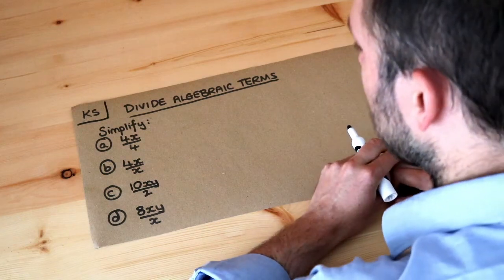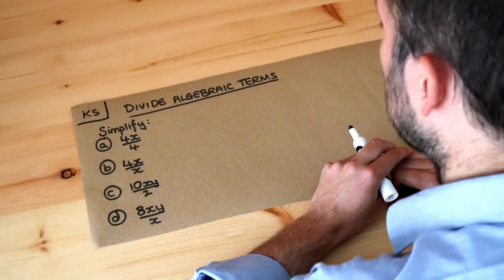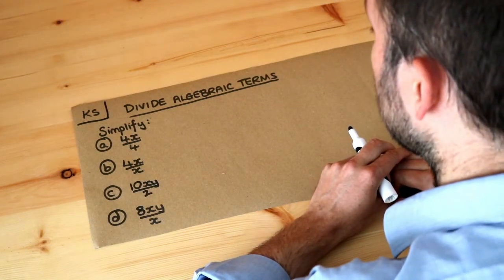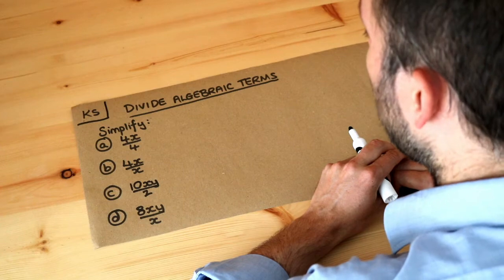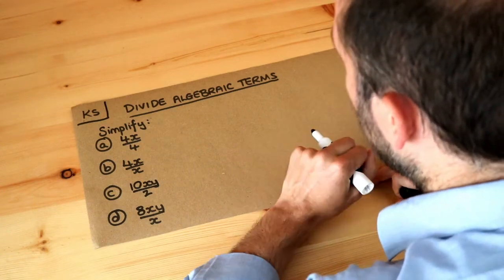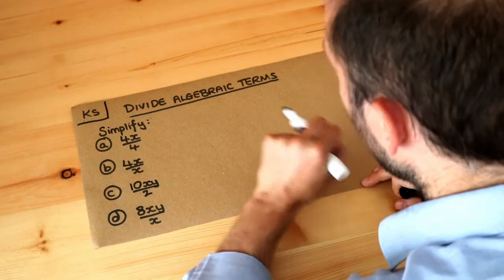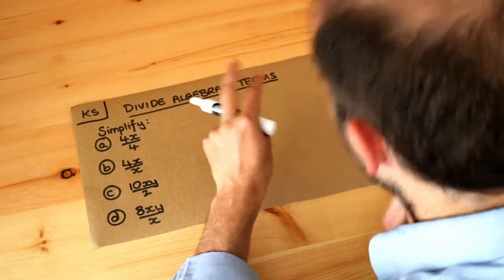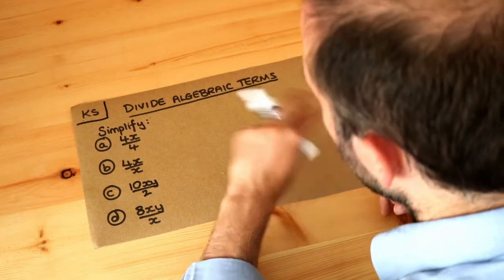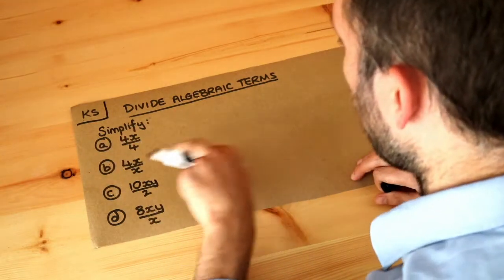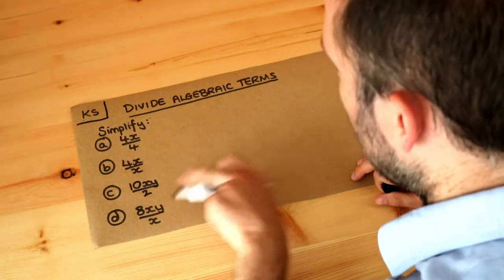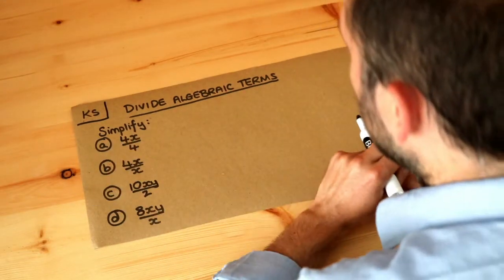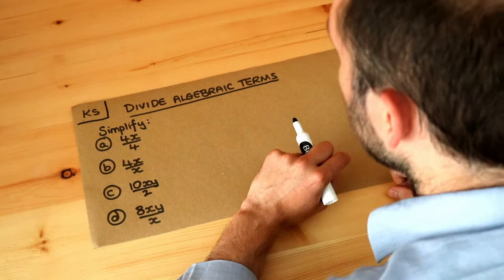Hello and welcome to Dr. Ross-Math's key skill video on dividing algebraic terms. Often we have algebraic expressions — a mixture of operations like addition and subtraction, numbers like four, and variables like x and y. And sometimes we just want to tidy it up.